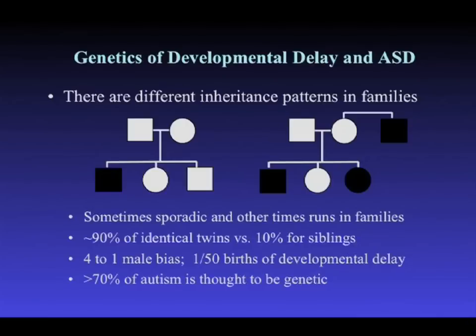Simplex families refer to families where there's no history of autism in the recorded history of that family — for example, a mother and father unaffected with one child, in this case a male, affected with autism. Multiplex families refer to individuals where there are typically two or more affected members, complicated by the definition of autism or developmental delay being used. These are the families typically recognized in both developmental delay and autism.